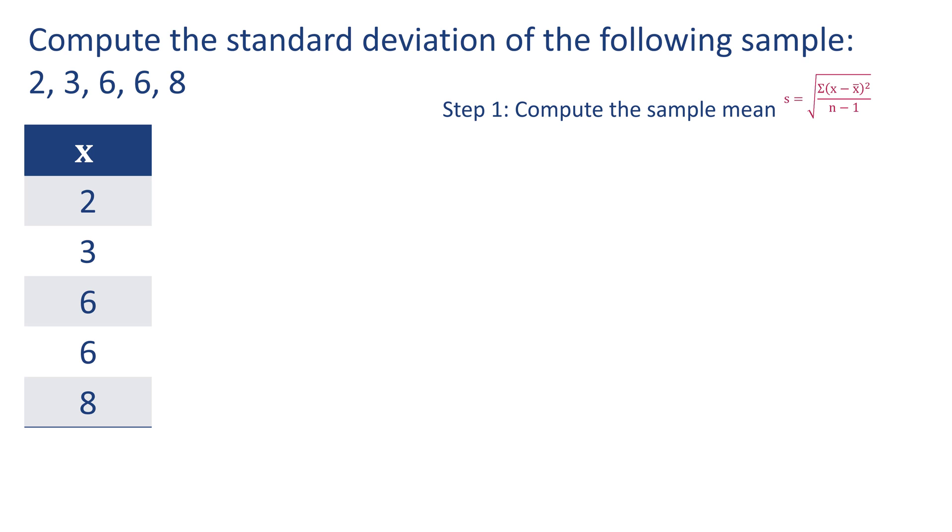Step 1: compute the sample mean. The mean is equal to all of the values added together divided by the number of observations. Here, 2 plus 3 plus 6 plus 6 plus 8 equals 25, and there are 5 observations. Our sample mean will equal 25 divided by 5, which is 5.